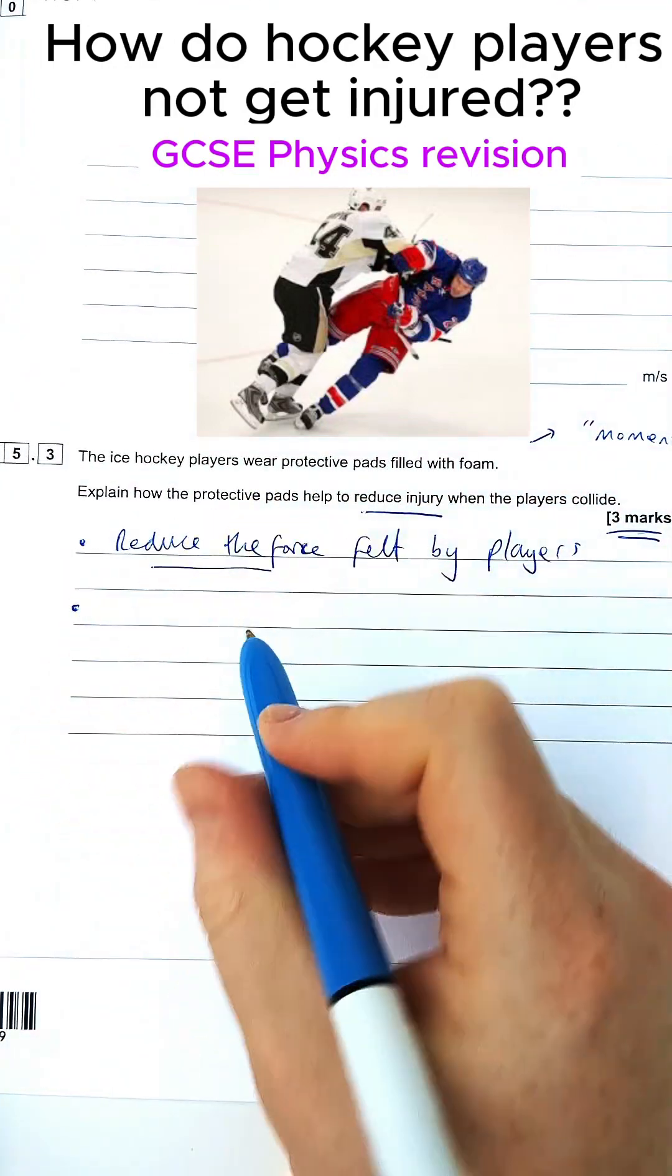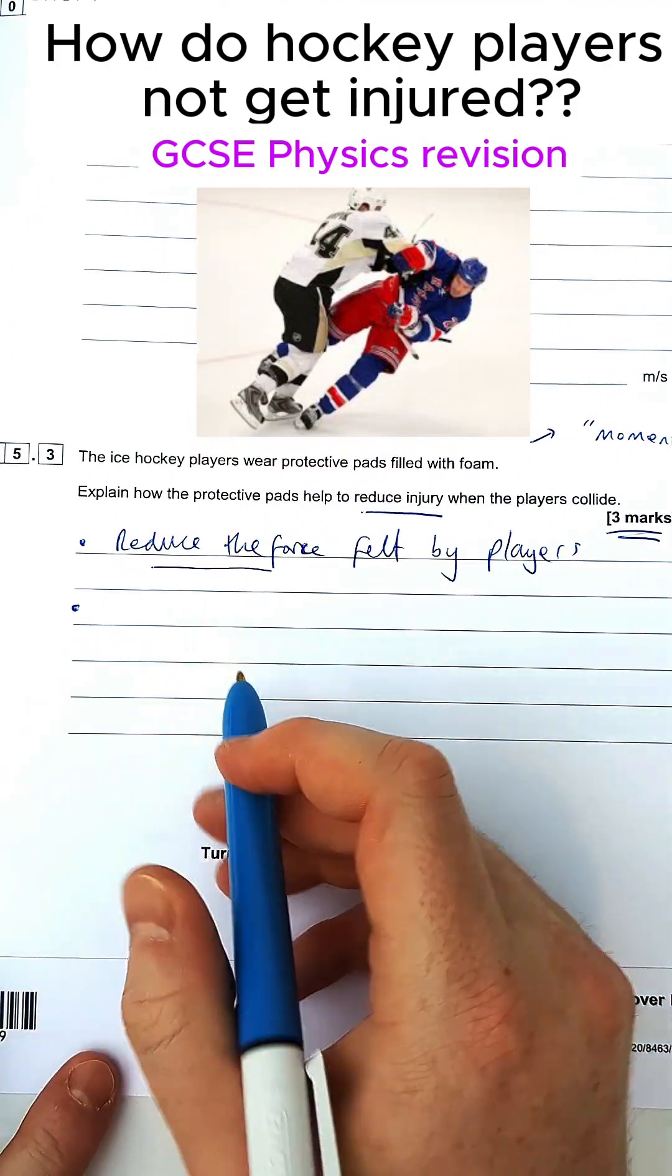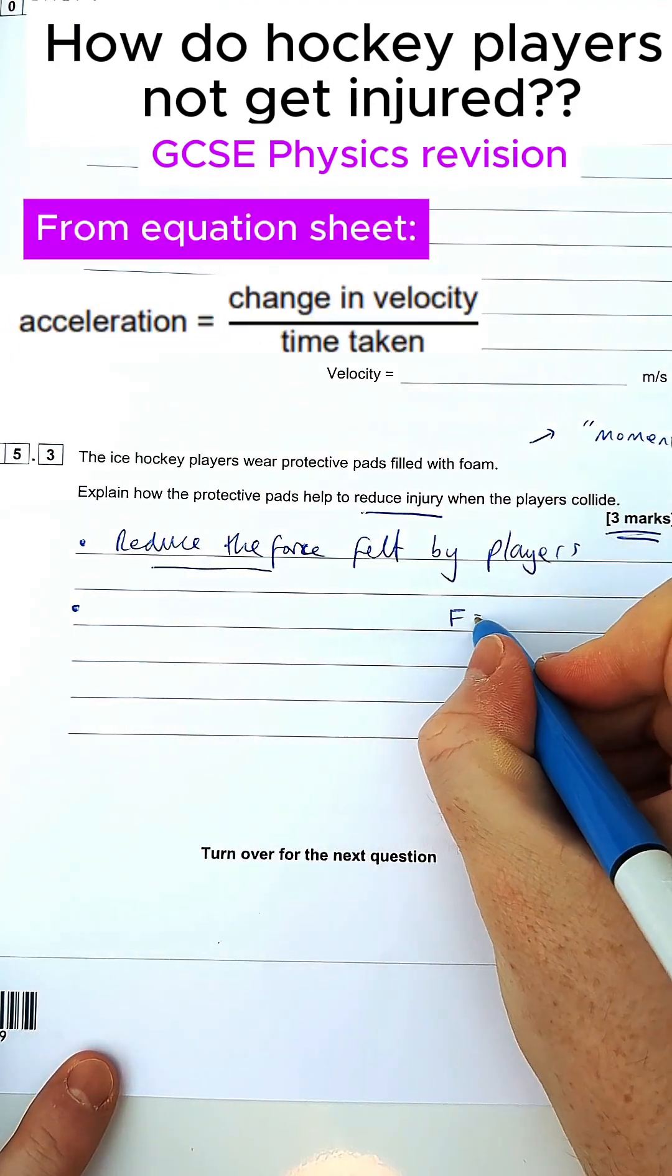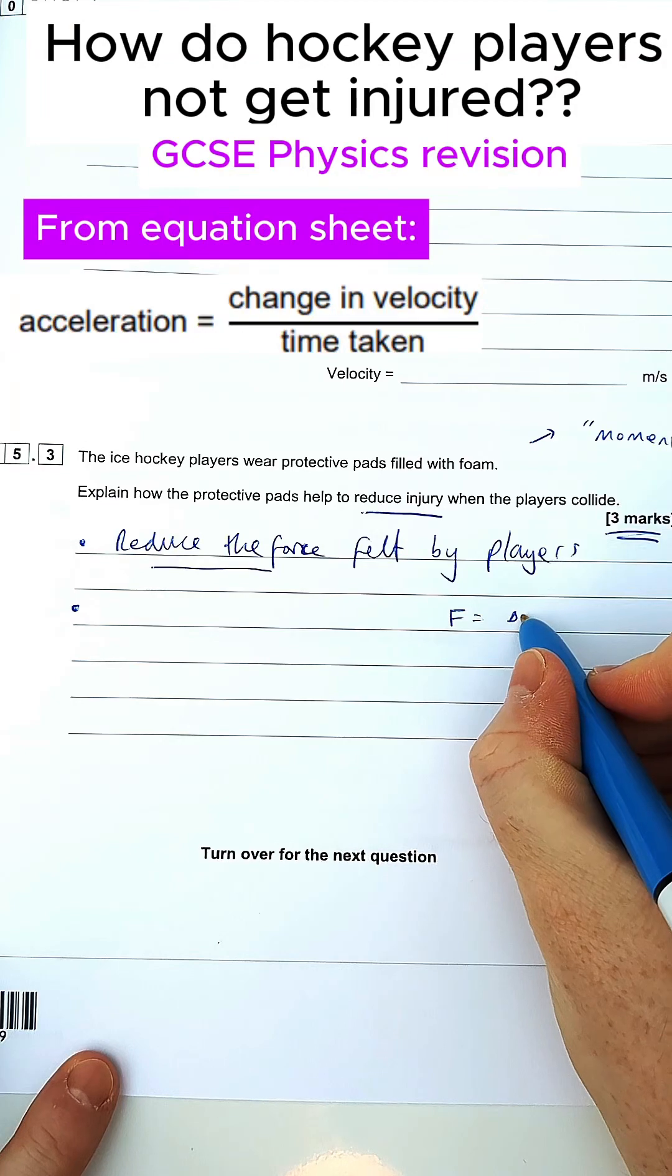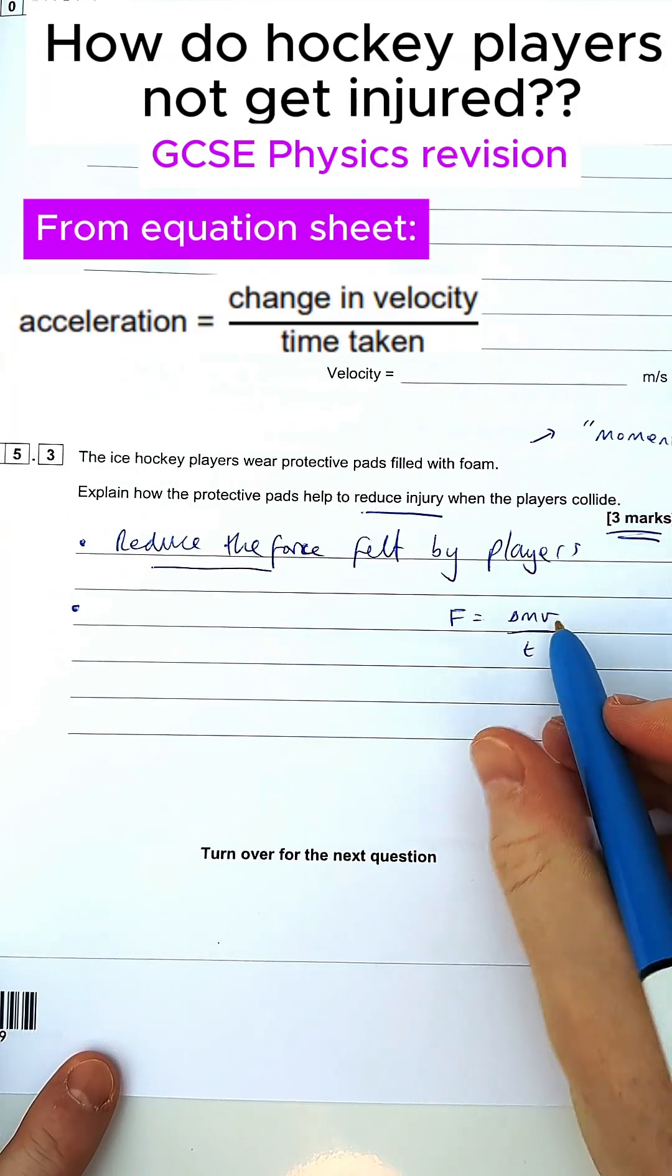Next thing is, how does it do that? Well, to explain this, we're going to look at an equation on your equation sheet, which is this one here. So it says force equals rate of change of momentum or change of momentum divided by time.